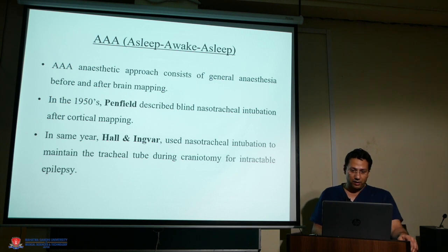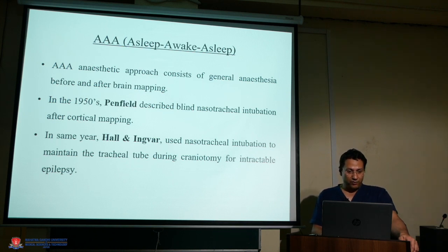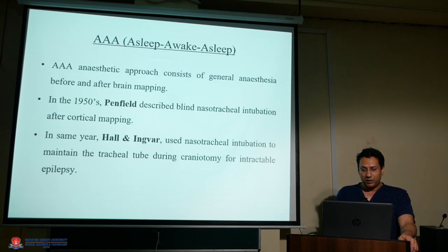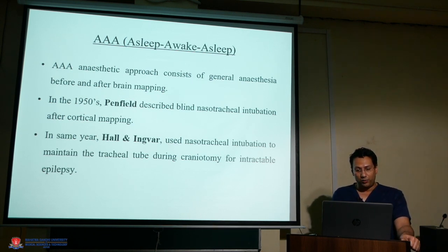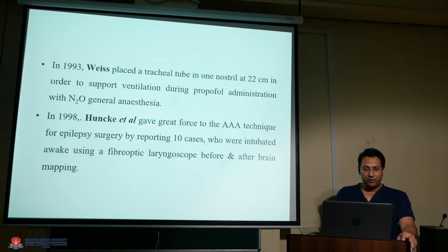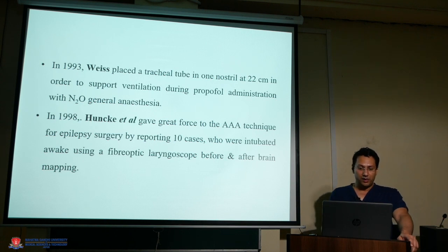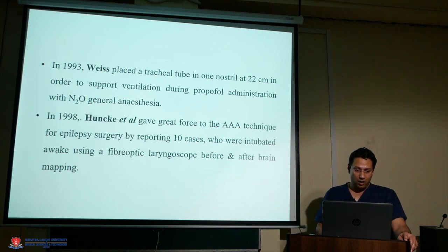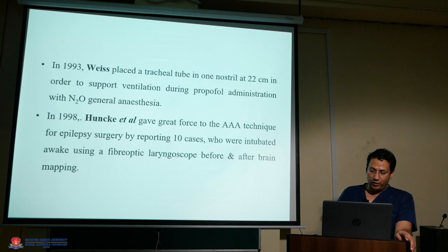The AAA (asleep-awake-asleep) anesthetic procedure consists of general anesthesia before and after brain mapping. In 1950, Penfield described blind nasotracheal intubation after cortical mapping. In the same year, Hall and Ingawar used nasotracheal intubation to maintain a tracheal tube during craniotomy for intractable epilepsy. In 1993, Weiss placed a tracheal tube in one nostril at 22 cm to support ventilation during administration of general anesthesia. In 1998, Hanke et al. gave great impetus to AAA techniques for epilepsy surgery by reporting 10 cases intubated awake using a fibreoptic laryngoscope before and after brain mapping.